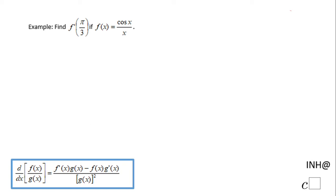Welcome or welcome back at any help at C square. In this example we need to find the derivative of function f at π over 3, that is the meaning of f prime of π over 3, if the f function is this quotient cosine of x over x. For that reason I'm going to use the quotient rule.